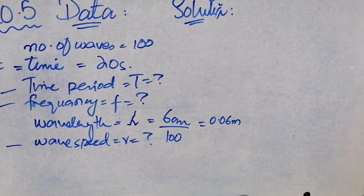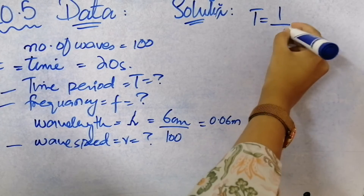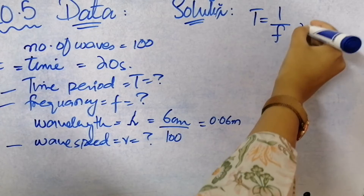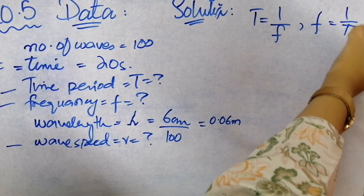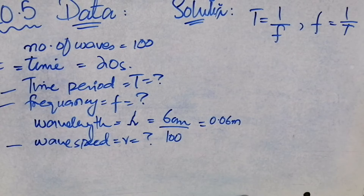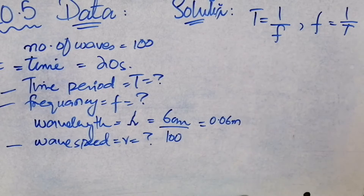Now the formula: T is equal to 1 upon F, and this is how F is equal to 1 upon T. You should remember this — when you have frequency given or time given, you can find the other, because time and frequency are inversely proportional to each other.